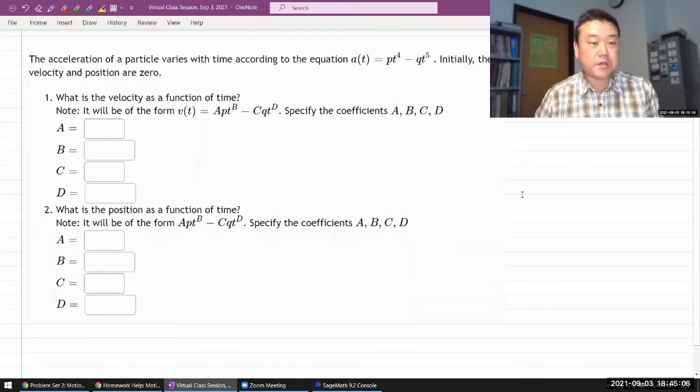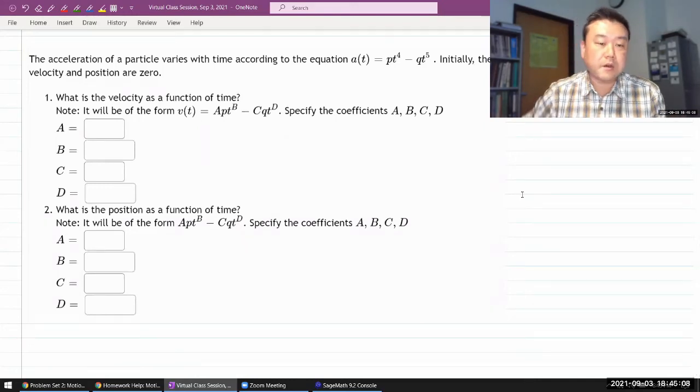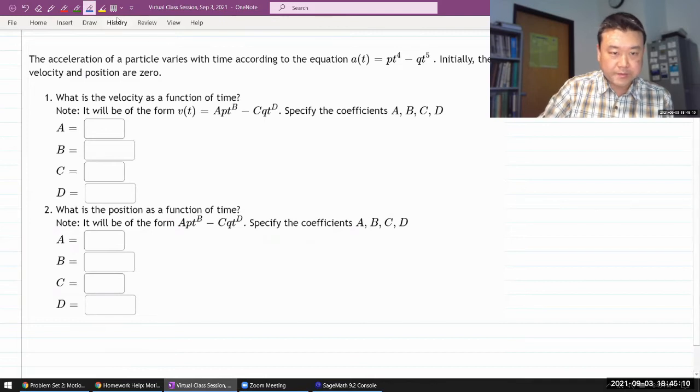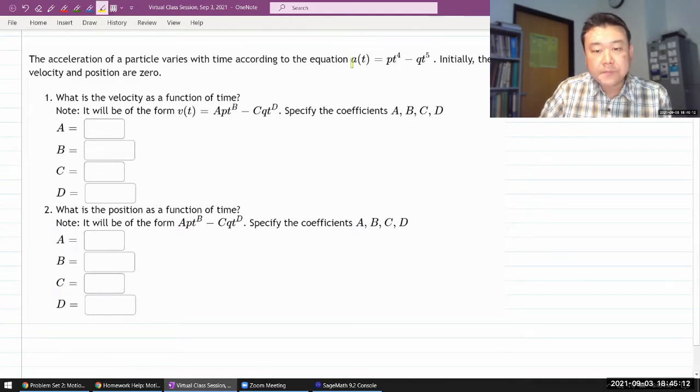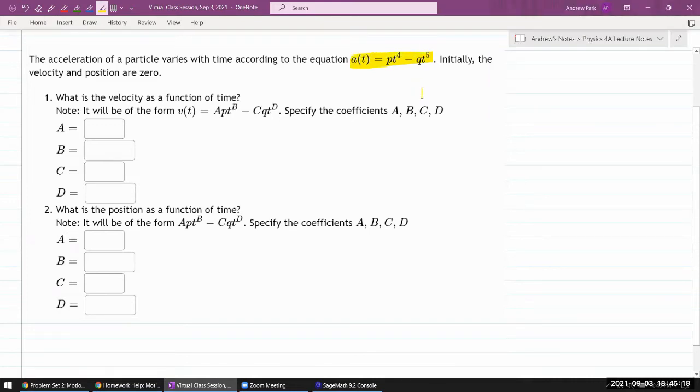So that's the question. It says the acceleration of a particle varies this way. The question starts out by giving you an expression for acceleration, and then it's going to be asking velocity and position.